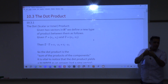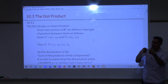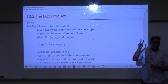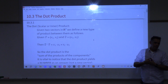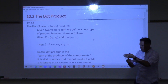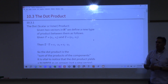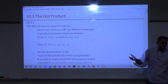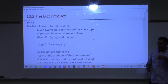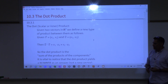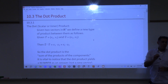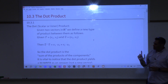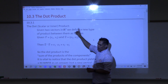When it comes to vectors, for the first time, something is going to happen that isn't natural. When it comes to multiplication of vectors, we have two different types of multiplication. Right now if I ask you what's 4 times 5, you just say 20 — there's only one multiplication. Here with vectors, you can't just say multiply these two vectors — you have to be specific about which multiplication you're talking about. The first type is called the dot product.